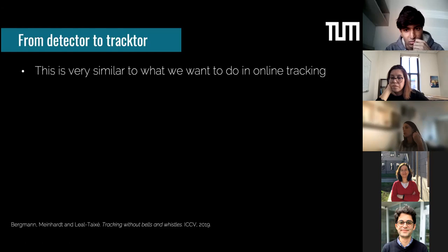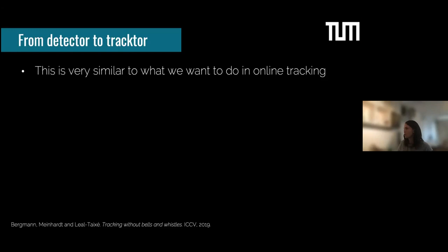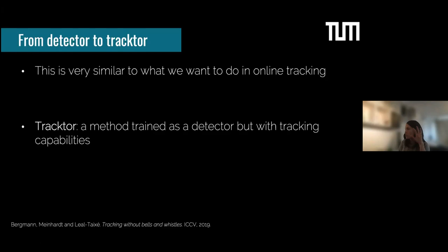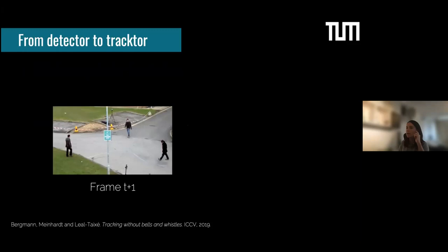In online tracking — going one frame at a time rather than batch processing — your bounding box has not shifted by a lot from frame to frame. So we asked: what if we take our detector, which is trained as a detector, and use it for tracking? This is how we came up with the name Tracktor — a detector that has tracking capabilities.